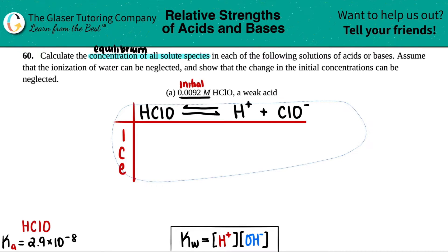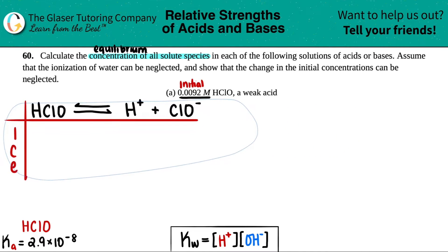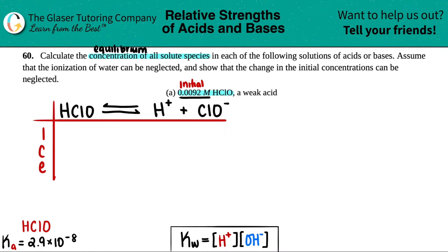We've seen these before in chapter 13 when we did equilibrium. So it's the same exact idea here. ICE. And maybe what I'll do is I'm just going to move this over to this side because we have some math going on. I stands for initial. So I'm starting with 0.0092 for HClO. Now, did they say that I started off with any H plus or ClO minus? No. So zero and zero.